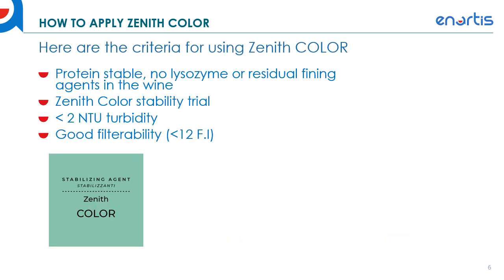Now I'll talk about applying Zenith Color and the criteria you need to meet. First, you want your wine to be protein stable. Protein stability is not usually an issue in red wines because of the level of phenolic content and tannin — those tannins and phenolics bind to proteins during fermentation, so there's not a lot of protein content in red wines. However, some non-vinifera varieties might be protein rich because they don't have a lot of tannin, so if you're using a non-vinifera you might need to check protein stability before using Zenith Color. Also, make sure you don't have any lysozyme in the wine — we don't recommend using Zenith Color in wines treated with lysozyme. If the wine has been treated with lysozyme, you should use bentonite or some protein removal fining agent to remove that lysozyme first.